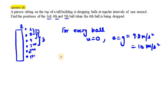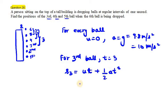So for third ball, time is 3 seconds. Now we need to find S3. S equals ut plus half at square. U will be 0 in every case, so the first term will be neglected. Half a, a is 10, t here is 3, 3 square. So it will be 5 into 9, this will be 45 meters.